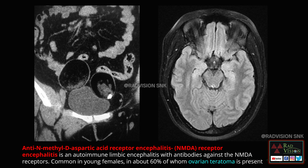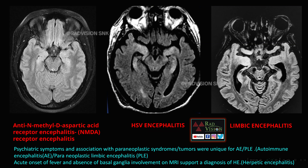In 60 percent of cases you can see ovarian teratomas. The top three differentials here are: anti-NMDA receptor encephalitis, HSV encephalitis — where hyperintensities are in the inferomedial temporal lobes and along the amygdala and hippocampi — and other forms of limbic encephalitis.